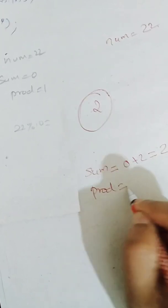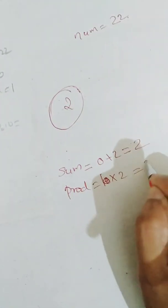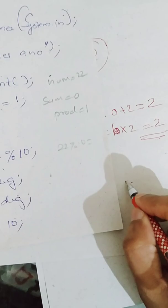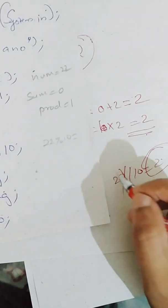And product is equal to 1 into 2, which is equal to 2. And next is num is equal to num by 10. So num is equal to 22 by 10 which is equal to 2.